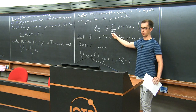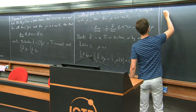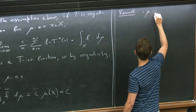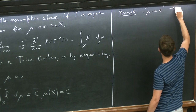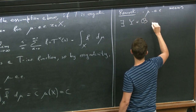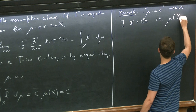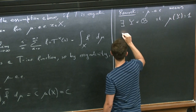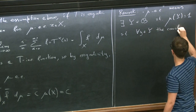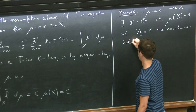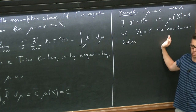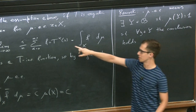A remark on what 'mu-almost every x' means: there exists a set Y with mu(Y) = 1 (full measure) such that for all y in Y, the conclusion holds. Equivalently, the set where the property fails has measure zero. Whenever we say mu-almost everywhere or almost surely, we mean there exists a set of full measure where this happens.